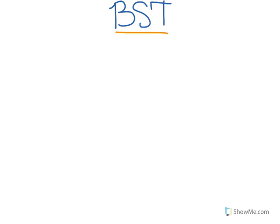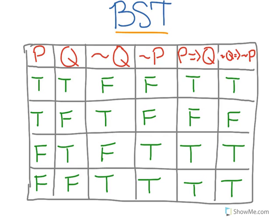So why does the contrapositive work? Let's look at another truth table. Here's our truth table, and remember, even though it looks intimidating, a truth table just shows all of the different options for conditional statements. There are four cases that a conditional statement could fall under: if P is true and Q is true,